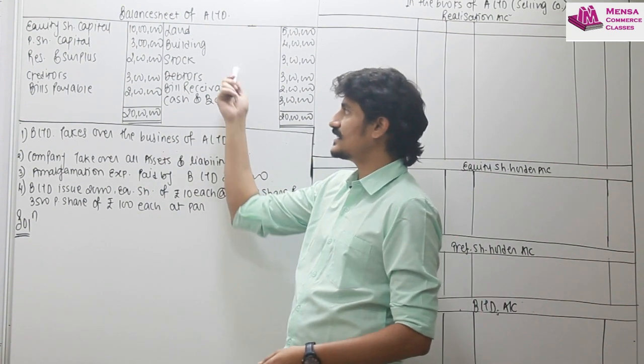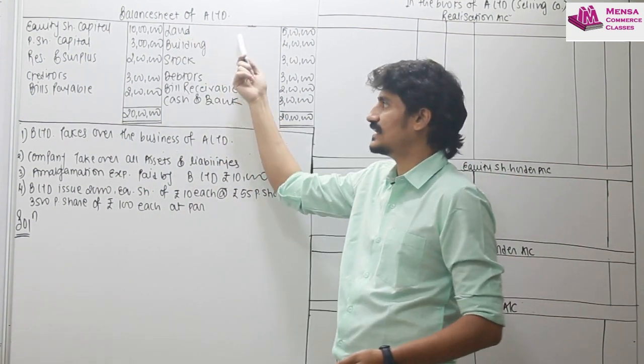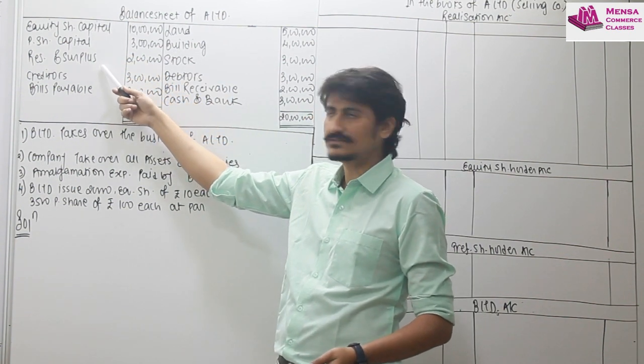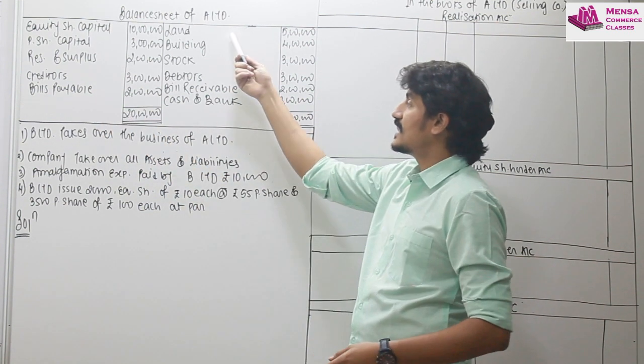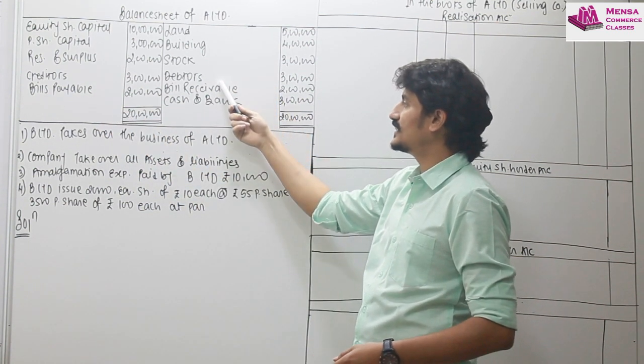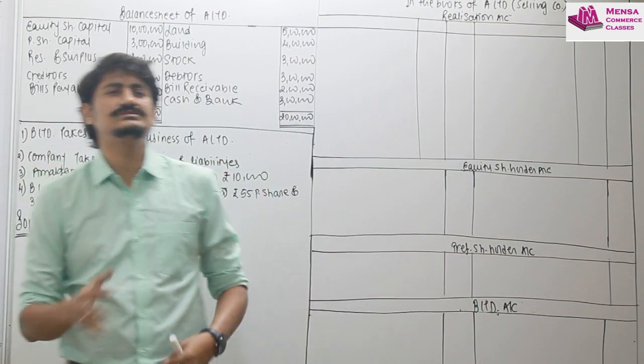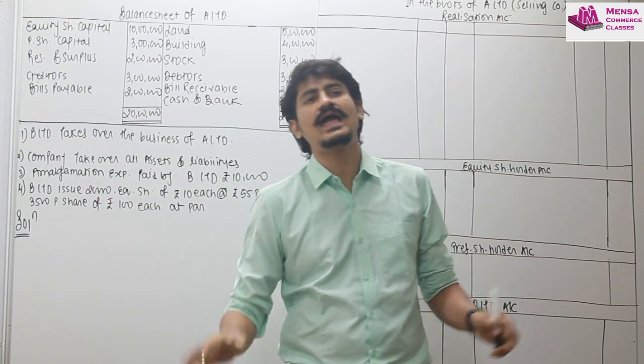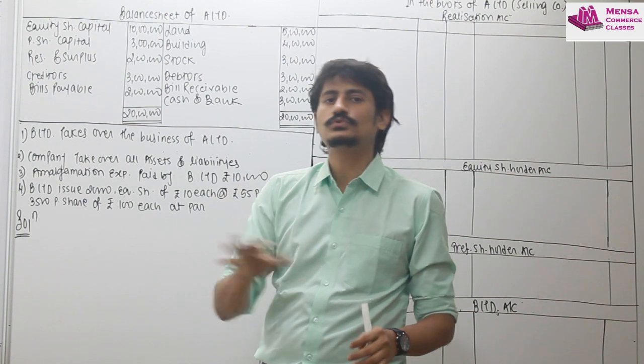This question is the same question as in the last video. Suppose this is the balance sheet of A limited. We have equity share capital, preference share capital, reserves and surplus, creditors and bills payable. On the asset side: land, building, stock, debtors, bills receivable, and cash and bank. In this video, I am just discussing the basic journal entries of the amalgamation and the posting of these particular entries. That is why the question is a little simple.